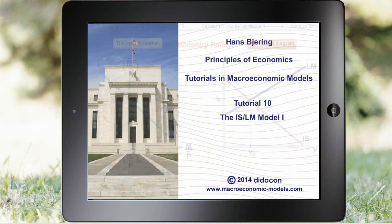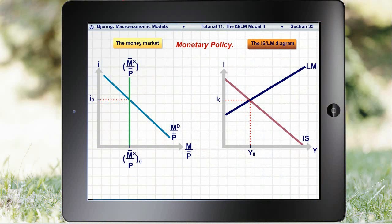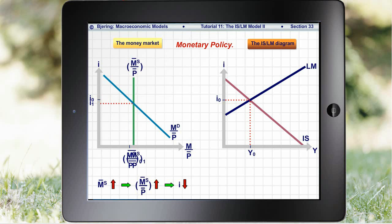Since we assume that the price level is constant, a change like an increase in MBAR increases the supply of real money balances and decreases the nominal interest rate.